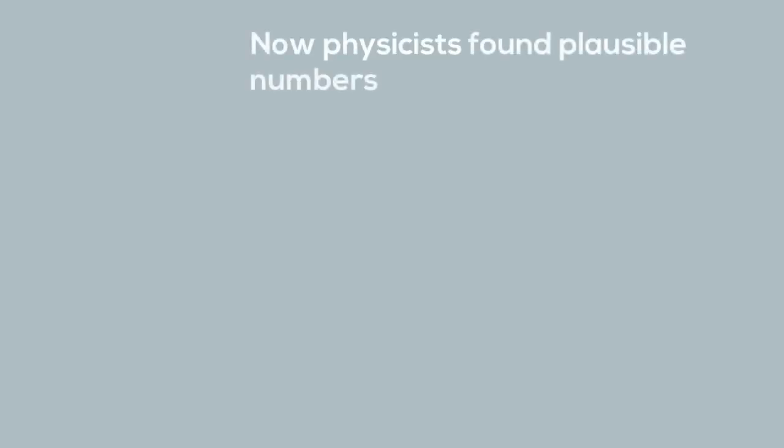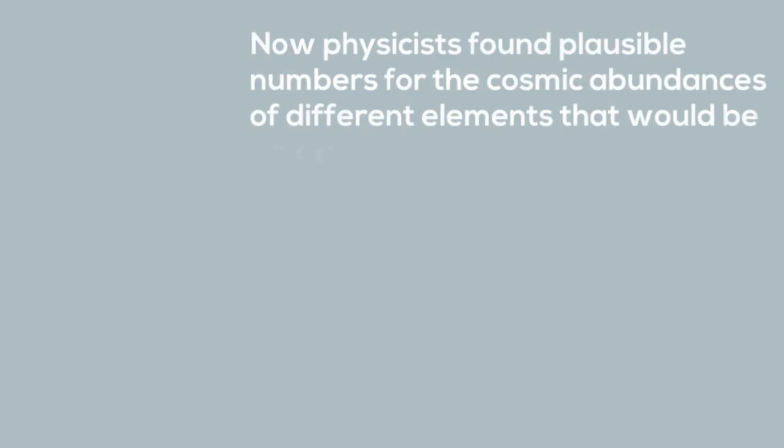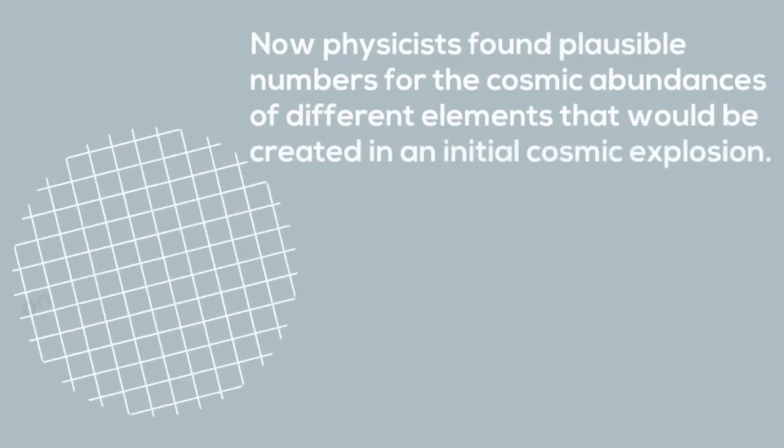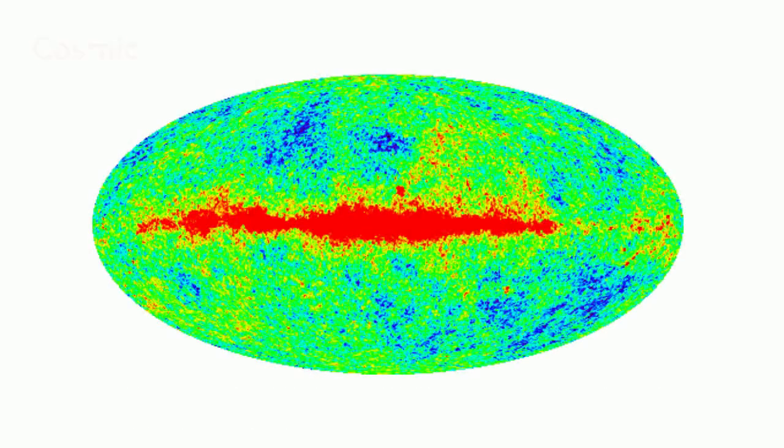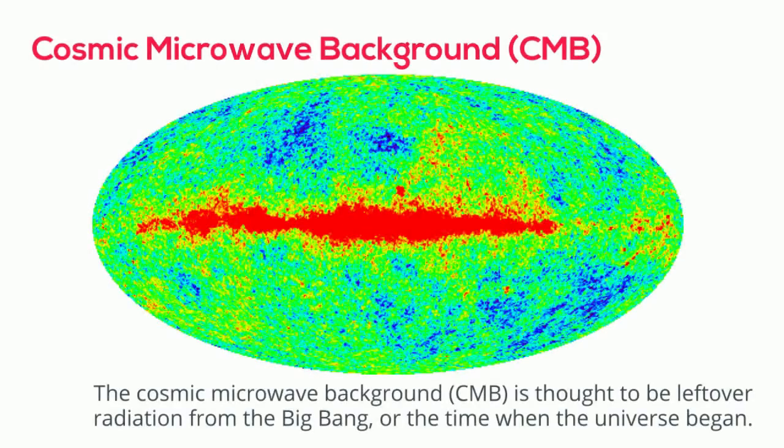Now physicists found plausible numbers for the cosmic abundances of different elements that would be created in an initial cosmic explosion, and evidence that the universe is expanding. A key part of this comes from observations of the cosmic microwave background, which contains the afterglow of light and radiation left over from the Big Bang. This relic of the Big Bang pervades the universe and is visible to microwave detectors, which allows scientists to piece together clues of the early universe.